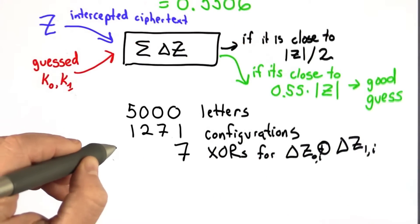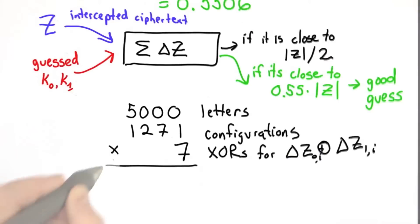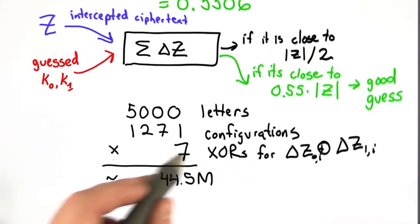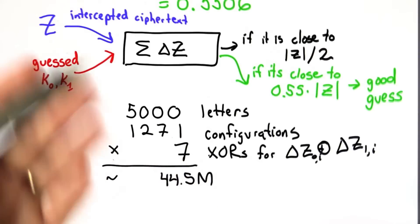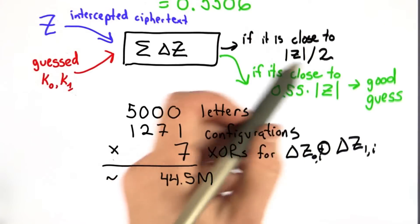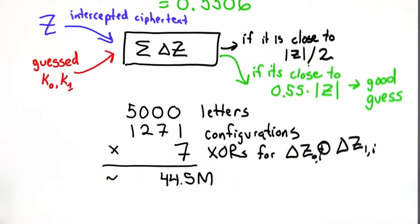So multiplying all those together, we know the total number of XORs we need to do. So we get about 44.5 million. That's the maximum number that we might need to do. If we're lucky, we might get the right configuration right away, and we could know that that's the right configuration by getting the high number of zeros out.